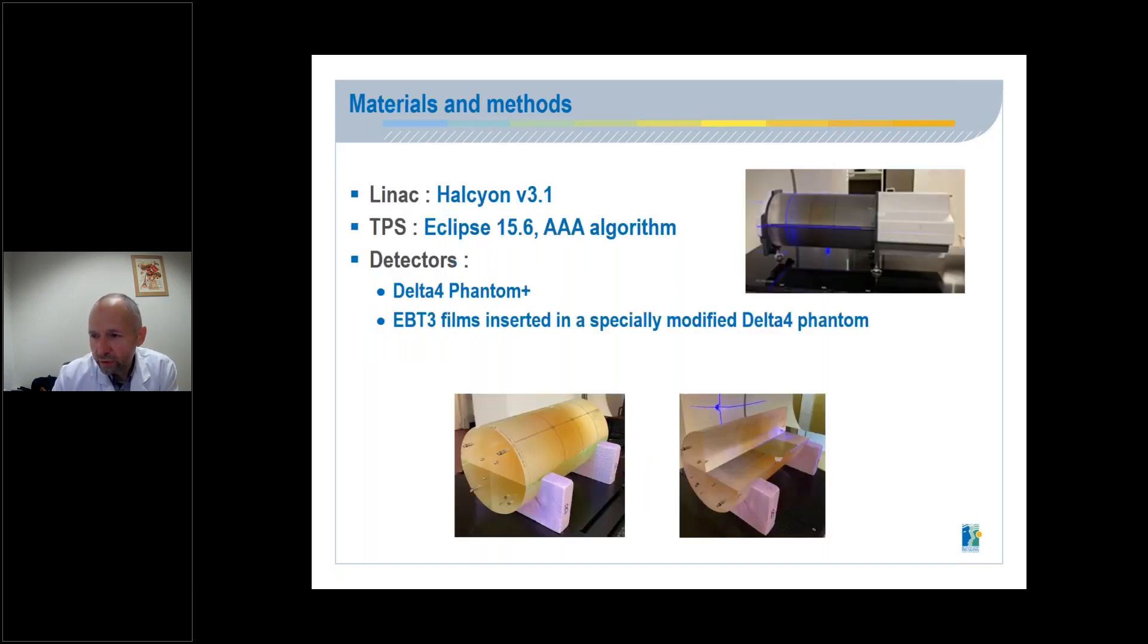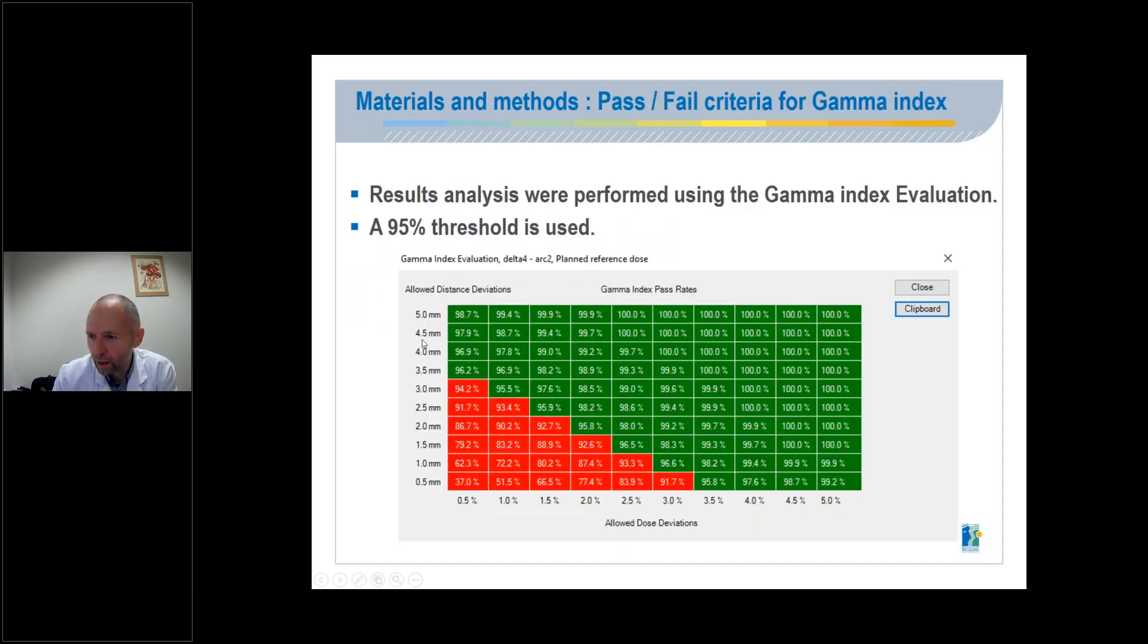The linac used was a Halcyon version 3.1. The TPS used was Eclipse version 15.6 with a triple A algorithm. And for detectors, we use a Delta IV Phantom Plus and an EBT-3 film inserted in a specially modified Delta IV Phantom. The results were analyzed using the gamma index evaluation. We use a 95% threshold.